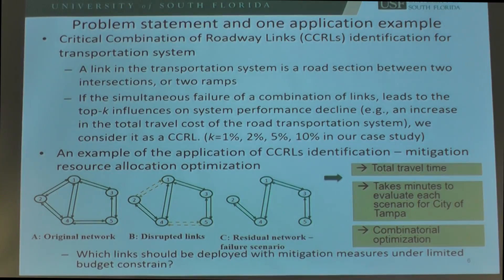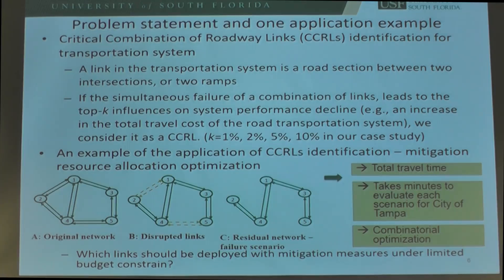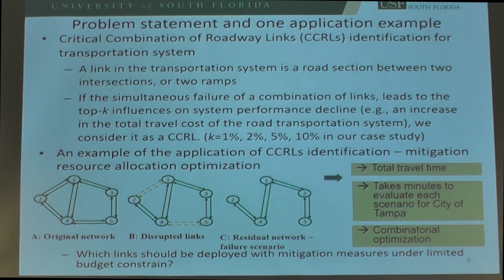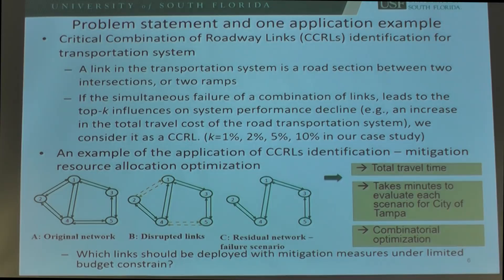As mentioned, there could be links in the transportation system, and link failure is the focus of this work. If the simultaneous failure of a combination of links leads to top key influences on system performance decline — for example, increasing total travel time — we consider it a CCRL, a critical combination of links. We are not going to work on the single most critical one, but identify a group of them. We define K as the critical criteria; K could be 1%, 2%, 5%, or 10% in our case study.